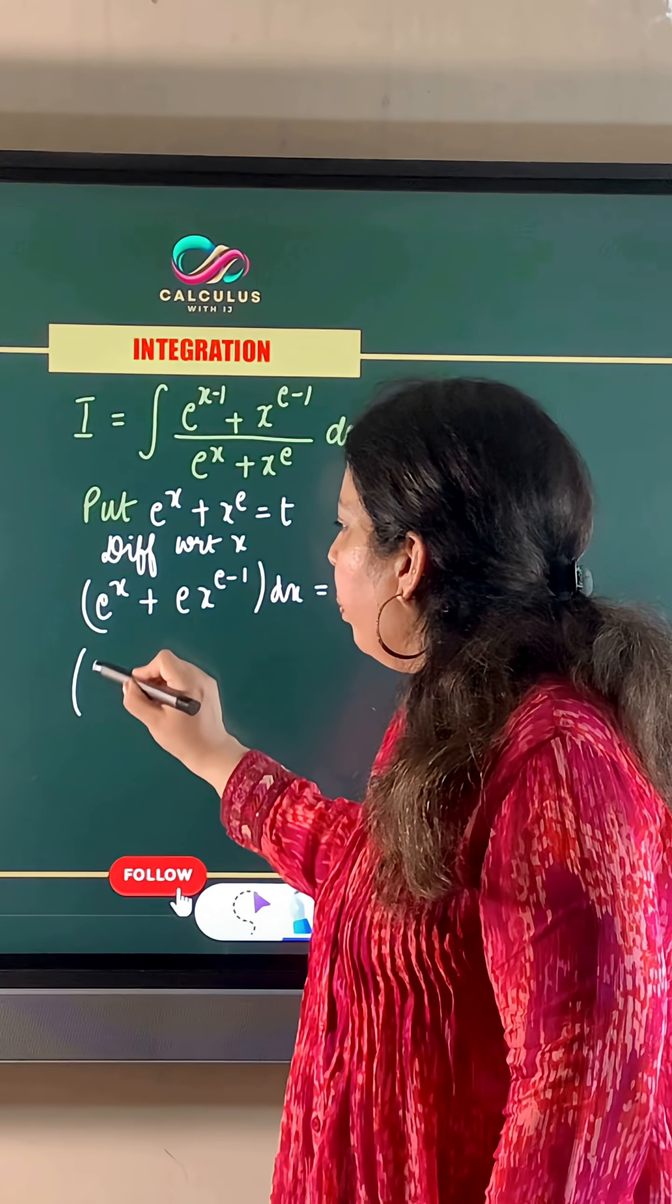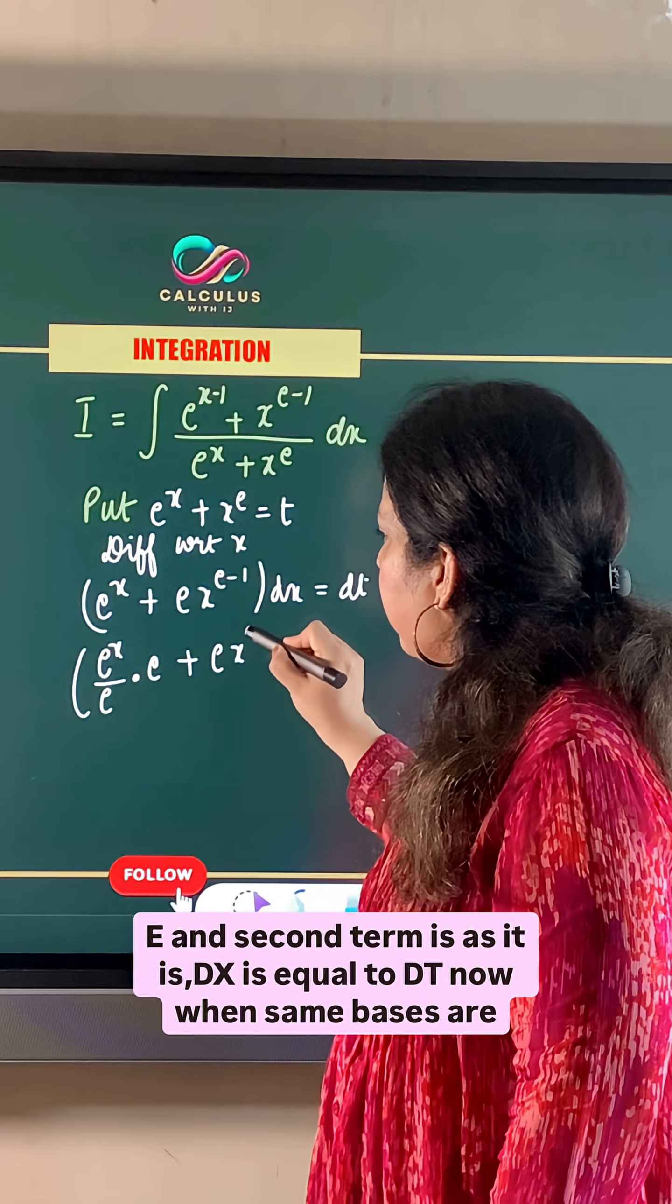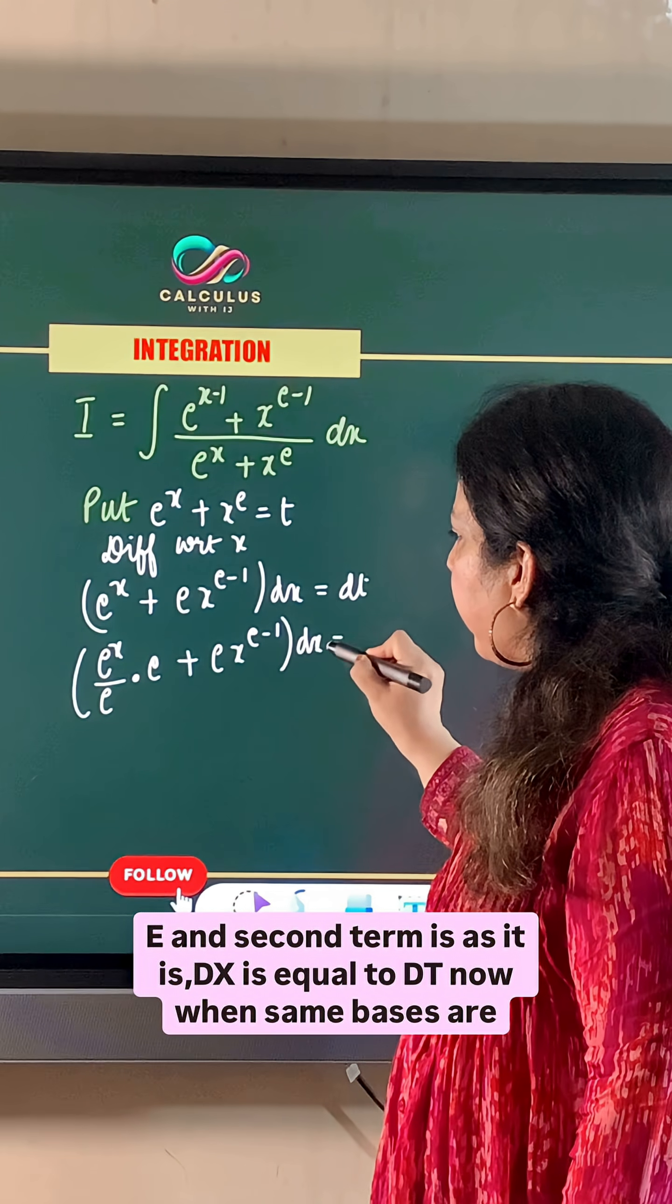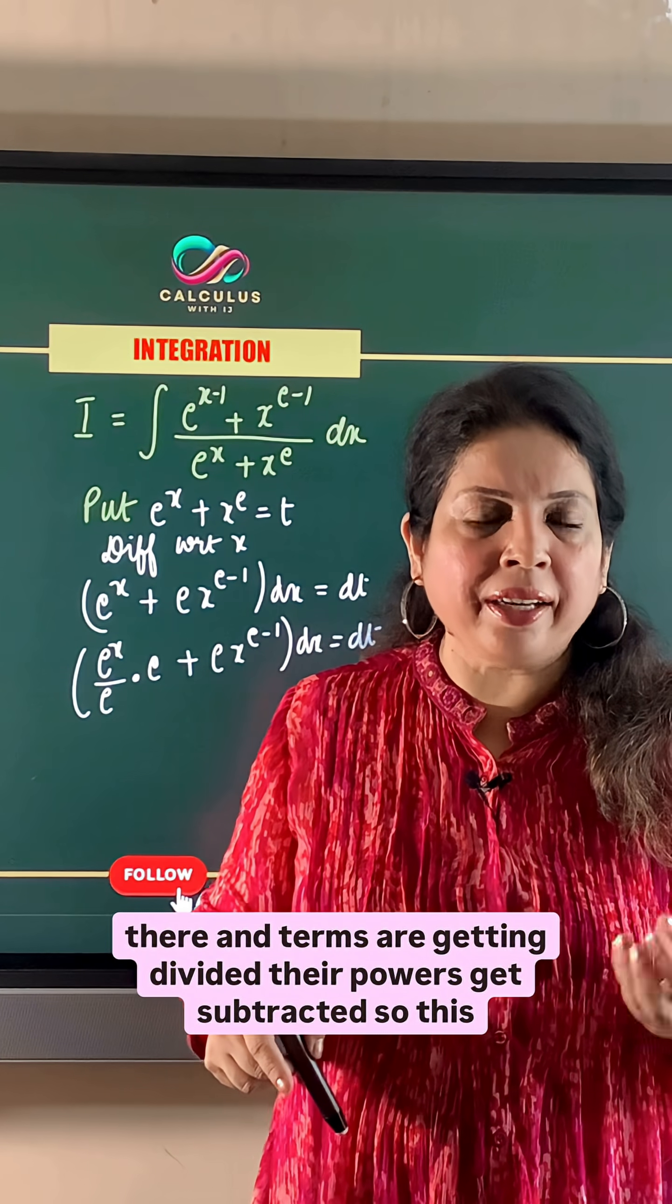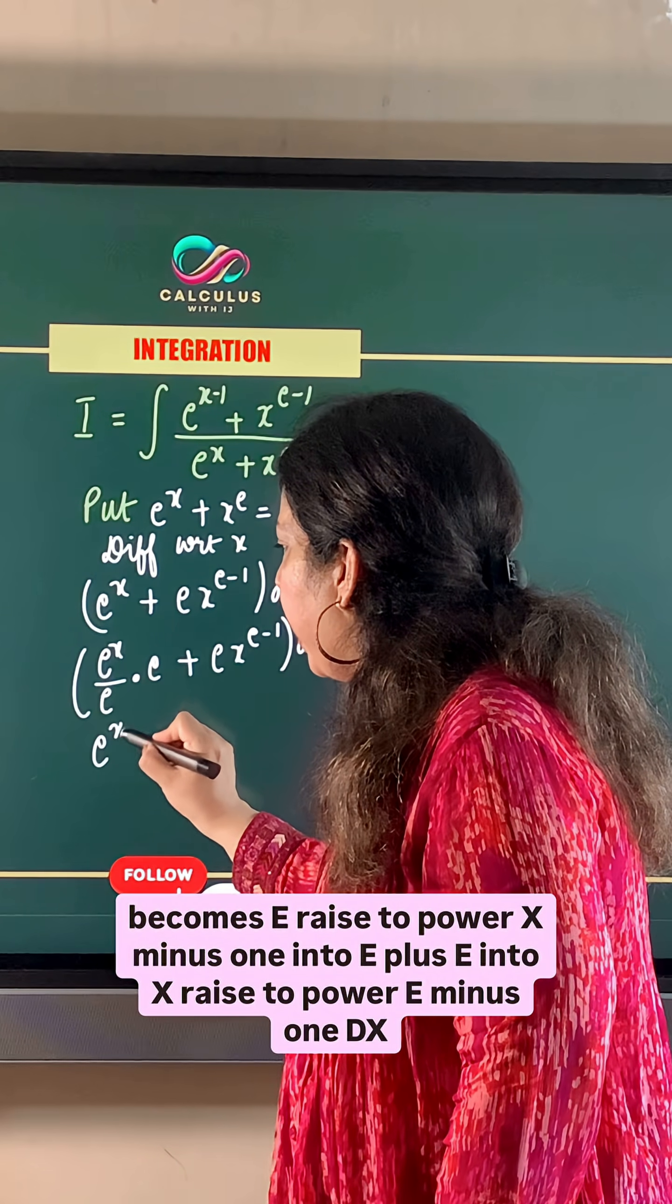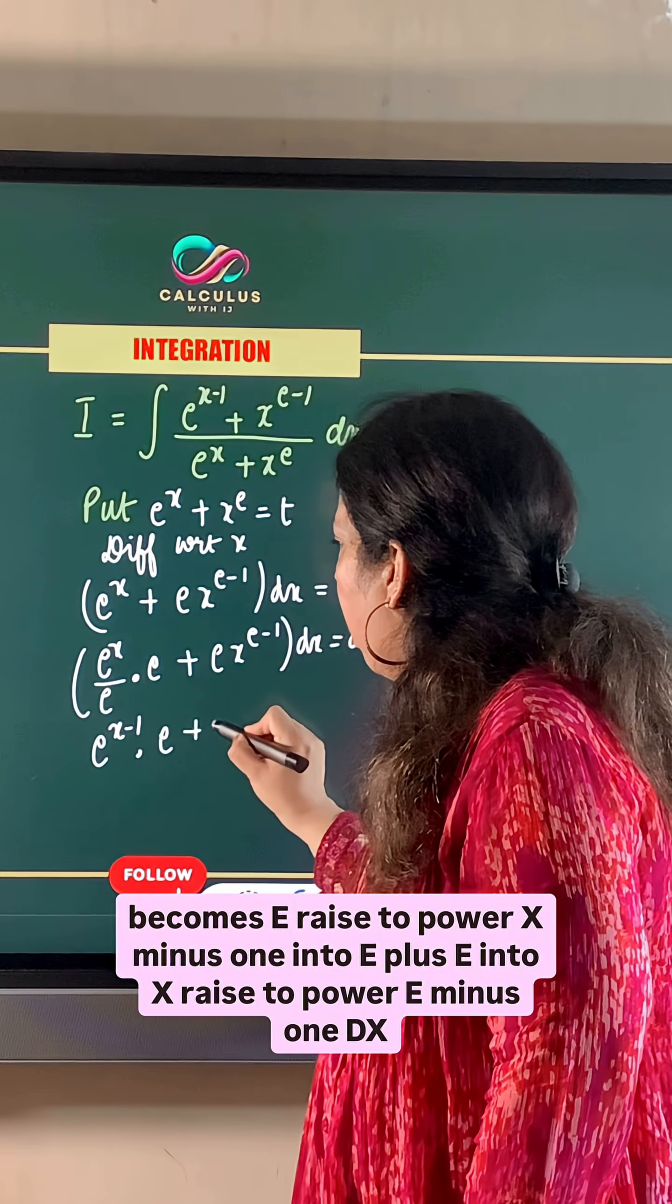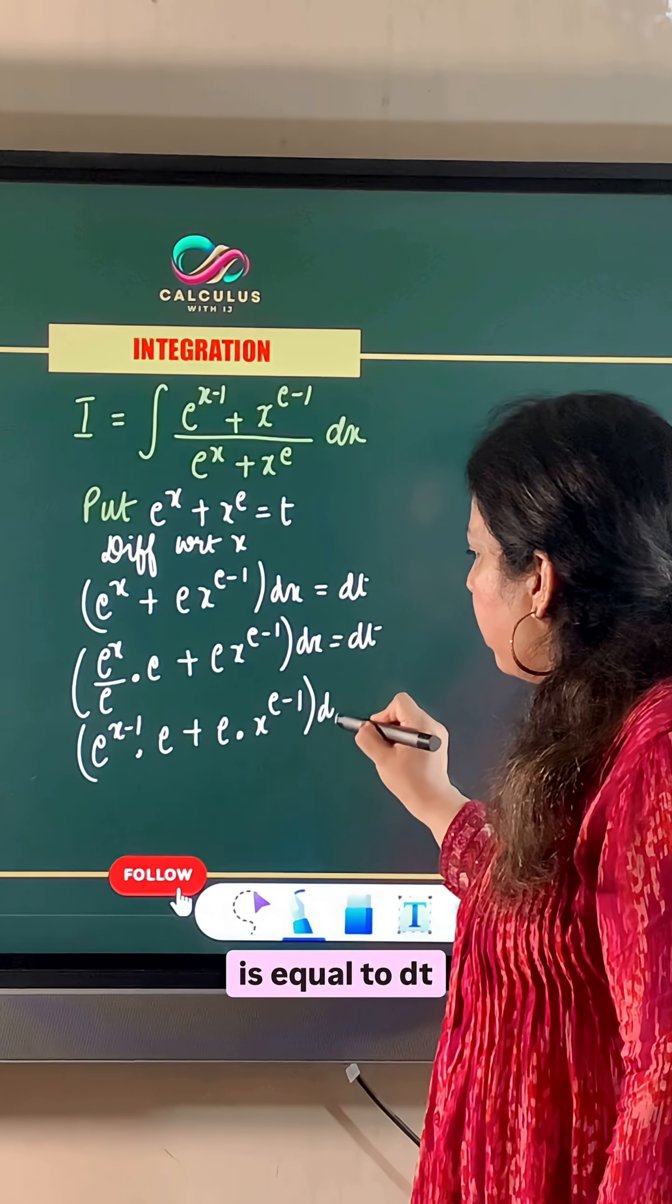So what we can do is multiply this term and divide it by e, and the second term is as it is, dx is equal to dt. Now when the same bases are there and terms are getting divided, their powers get subtracted. So this becomes e raised to power x minus 1 times e plus e times x raised to power e minus 1 dx is equal to dt.